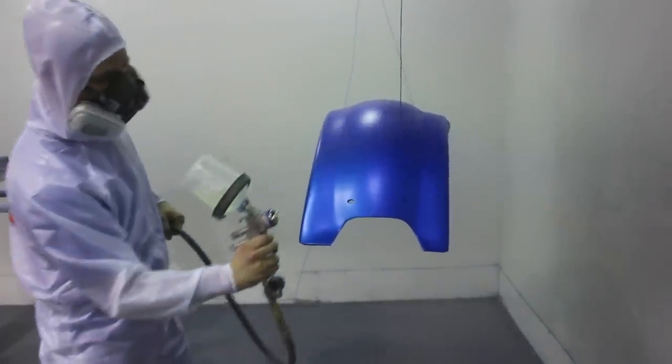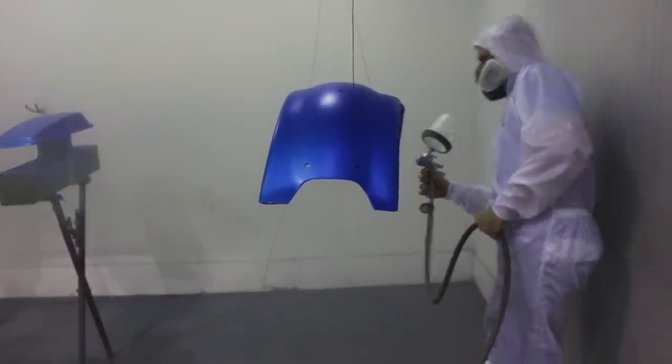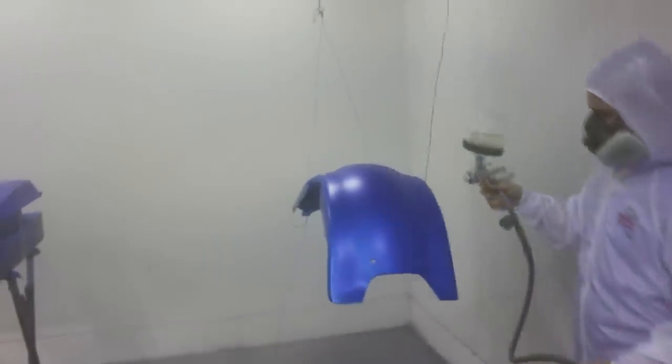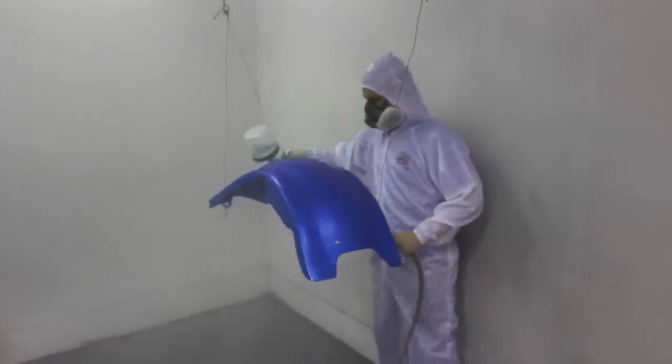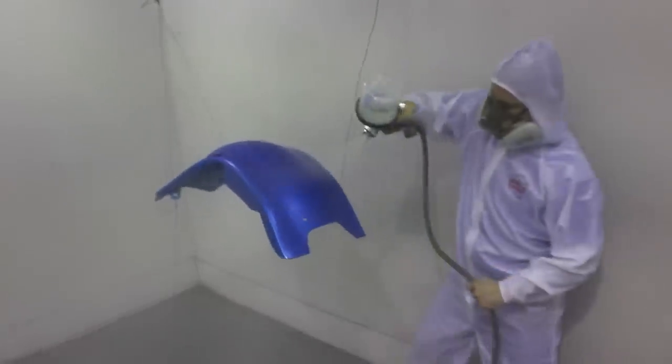And finally we get to apply the clear coat and see how everything looks once it's all shiny and sparkly and the metallic start to pop up and look magnificent. So we've got the SATA 5000 RP with a 1.3 and some Glazer clear coat.